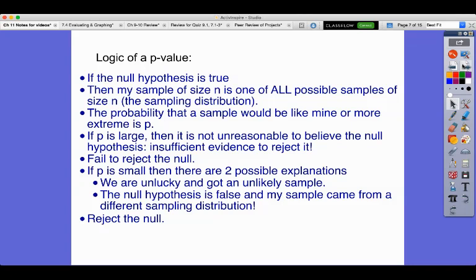The P value is saying, if the null hypothesis is true, then the probability of me getting a sample like mine is my P value. So if the null hypothesis is true, then my sample of size N is one of all possible samples of size N coming from the known sampling distribution, which is centered around my null hypothesis claim of my mu or my population proportion. And I know exactly what that distribution looks like. And then the probability that a sample would be like mine or more extreme is P, the P value.